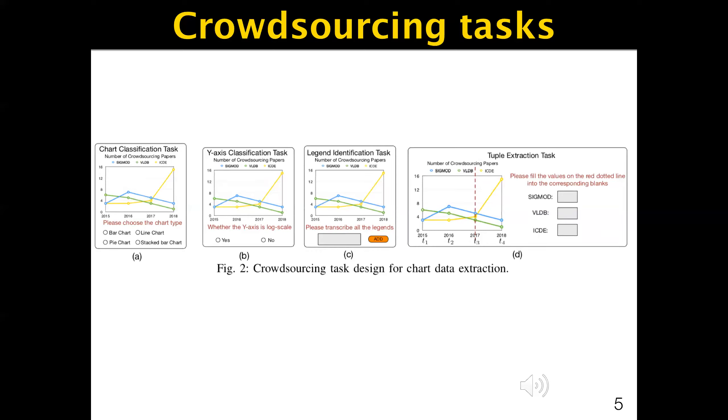The second is the y-axis classification task. Another factor affecting difficulty is whether the y-axis is log-scale. Thus, we also leverage the crowd to identify this issue as one of the preprocessing steps. Given a chart C, the y-axis classification task is a yes or no question to the crowd.